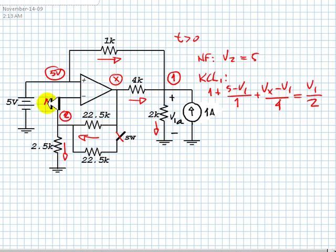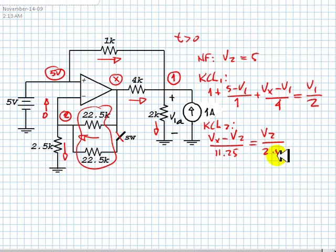And KCL for node number 2, remembering that this current is zero because this is an ideal op-amp. KCL2 will be Vx minus V2, which is 5, divided by this parallel, which is 11.25 kilos, equals to V2 divided by 2.5 kilos, the current here. Those are three equations and three unknowns: V1, Vx and V2. We need V1 because V1 is going to be V1a.